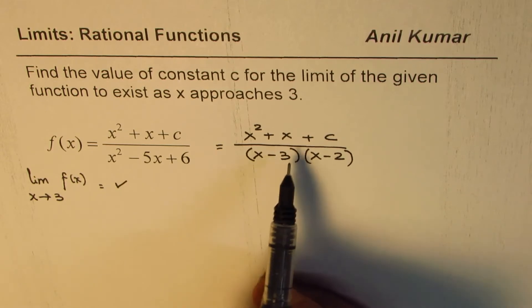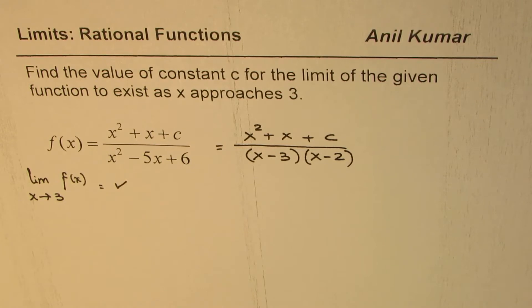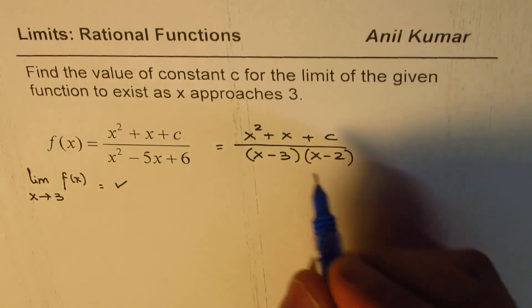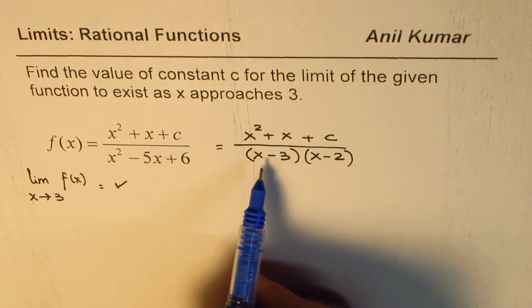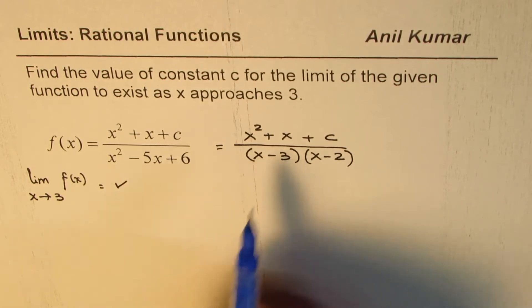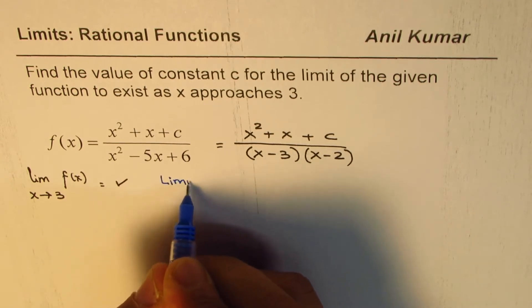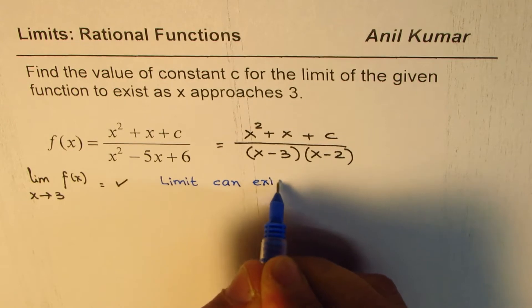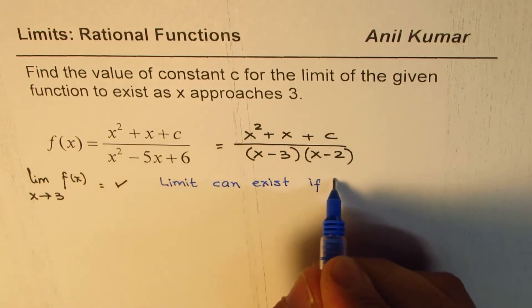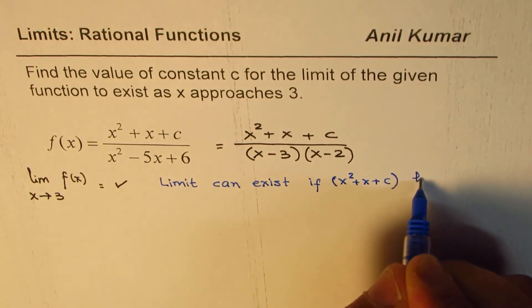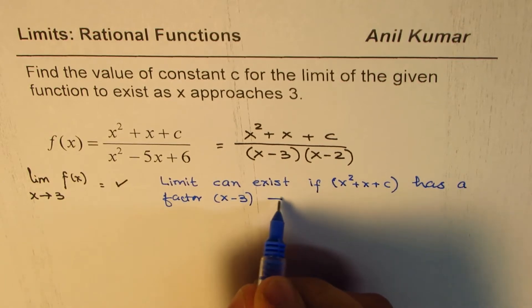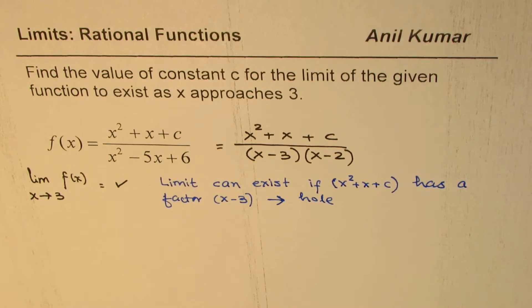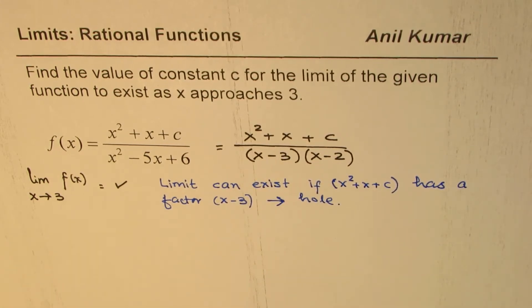However, there is a way for limit to exist. And the concept here is that we could have same factors in the numerator and denominator. So if we have a factor of x minus 3 in the numerator, then the limit can exist. The limit can exist if numerator, which is x squared plus x plus c, has a factor x minus 3. Since that is going to lead to a hole, and then we can approach from both sides a fixed value. So that is the concept. So we are going to use this concept to solve the question.